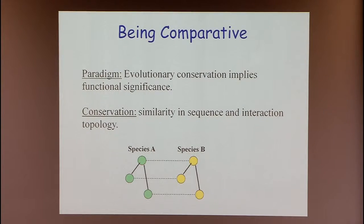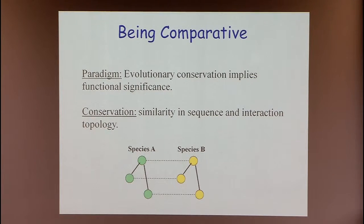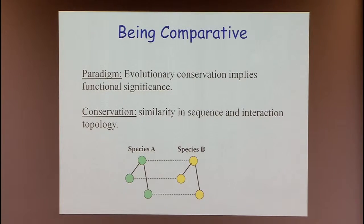The basic paradigm being used here is: if something is conserved in evolution, it is probably functional. If we see some sub-network that is conserved in evolution — meaning its proteins are sequence similar and its interactions are conserved — it may be functional. If we see something copied over two or more networks, we have more reason to believe it is a truly functional module, and therefore there is a lot of power in multiple-species information.